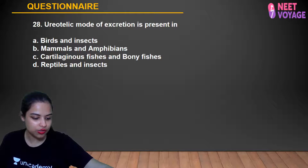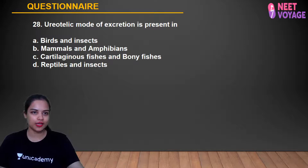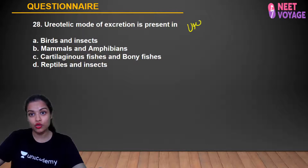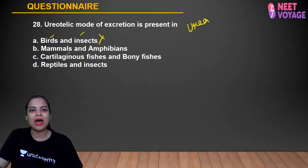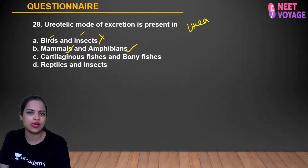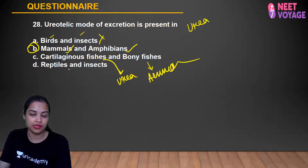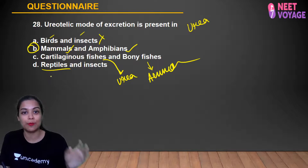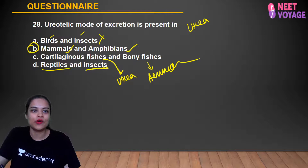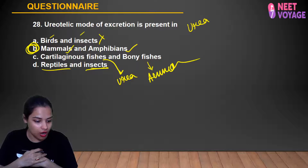Question 28: Ureotelic mode of excretion is present in which organisms? Birds and insects excrete uric acid — not urea. Mammals excrete urea — ureotelic. Amphibians mostly excrete urea (ureotelic), except aquatic amphibians. Cartilaginous fishes are ureotelic, but bony fishes are ammonotelic (release ammonia). Reptiles include ammonotelic, ureotelic, and uricotelic. So mammals and amphibians (option B) are ureotelic. Kamal, Shashank, Anshika, Sabah, Alok, Simran, and Tanusha gave the correct answer.